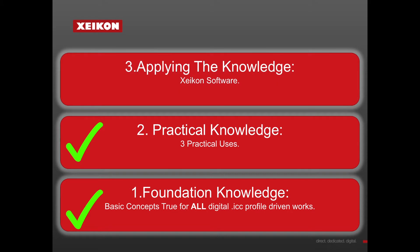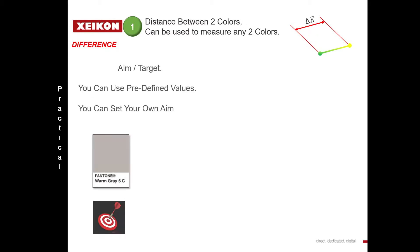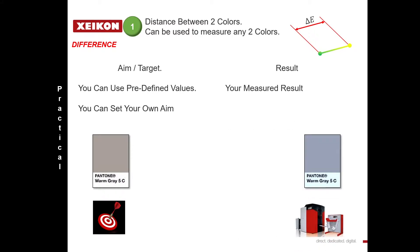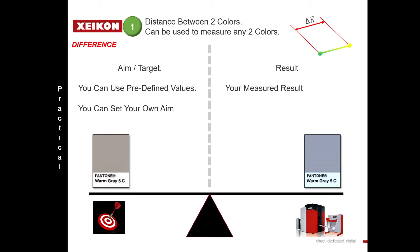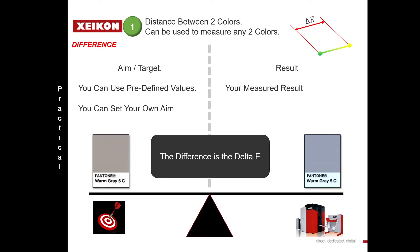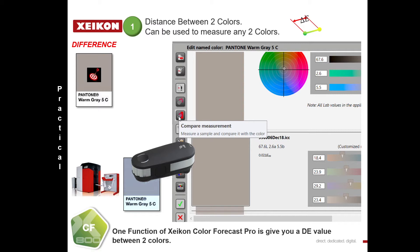Let's look at how we can apply these concepts with Zycon software. For difference, first you need a target or an aim — you can pre-define your aim or it can be set by somebody else. Then we have our result, and when we measure the difference between those two colours, this is a Delta E of difference. We can use Zycon Color Forecaster Pro to do this in a very simple, easy click-of-a-mouse way.